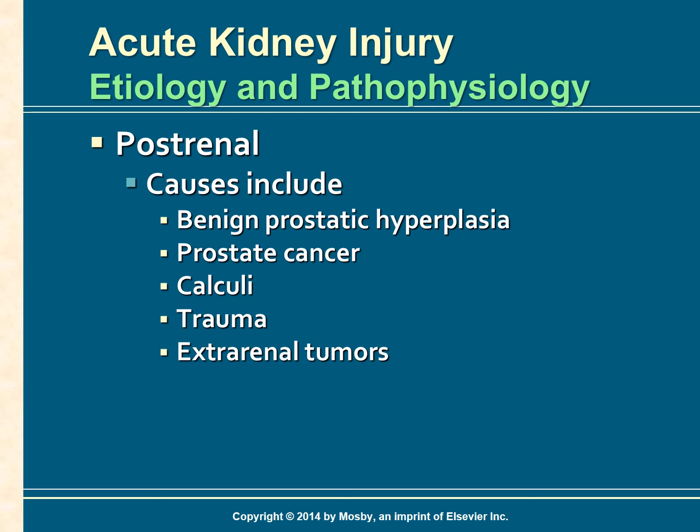Post-renal causes of AKI involve mechanical obstruction in the flow of urine. As the flow of urine is obstructed, urine refluxes into the renal pelvis, impairing kidney function. The most common causes are benign prostatic hyperplasia, prostate cancer, calculi, trauma, and extra-renal tumors.